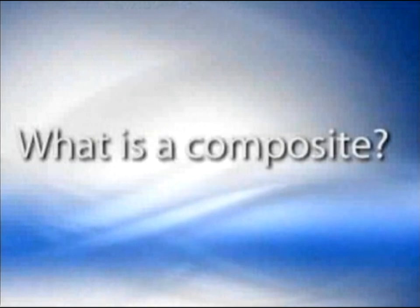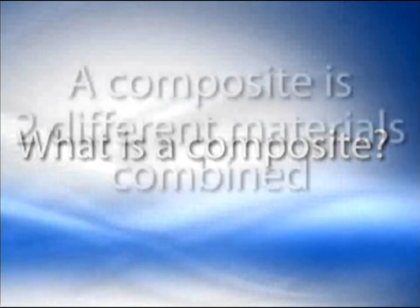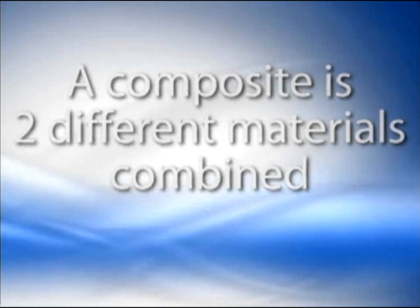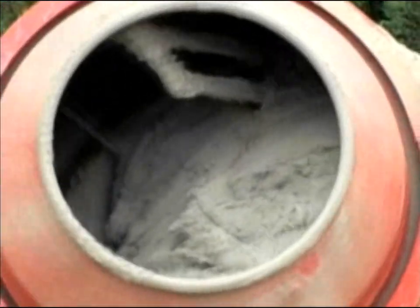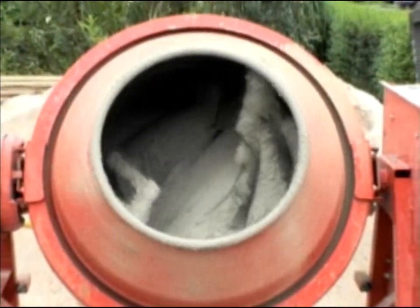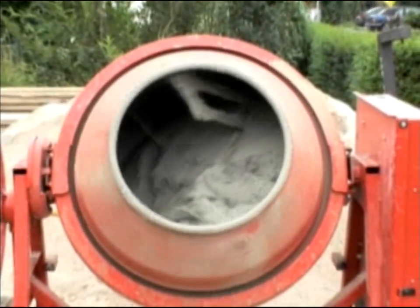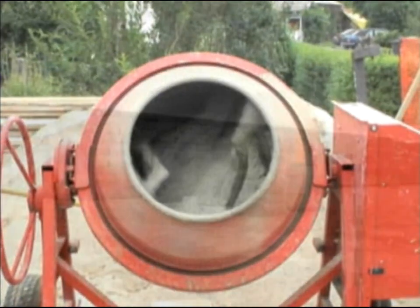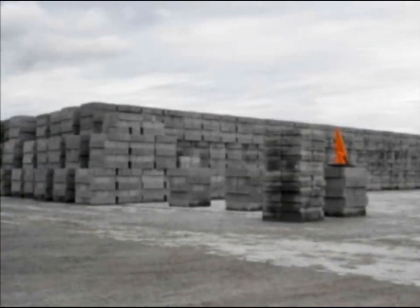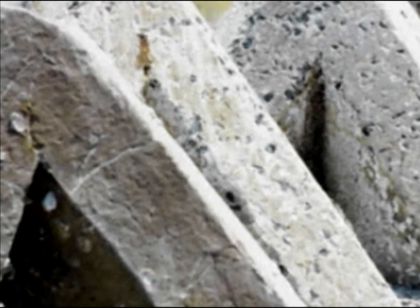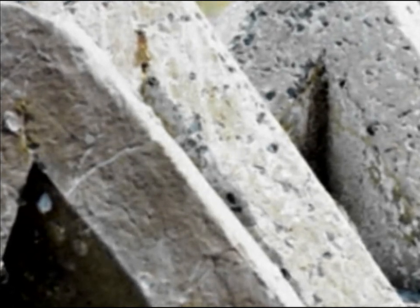So what is a composite, really? Simply, it's two different materials combined. A uniform substance like Portland cement is called a monolithic material. Throw in a handful of gravel — another monolithic material — and you have concrete, a composite. In a composite, you can still see the individual monolithic materials, the cement and the gravel. They're just locked together.